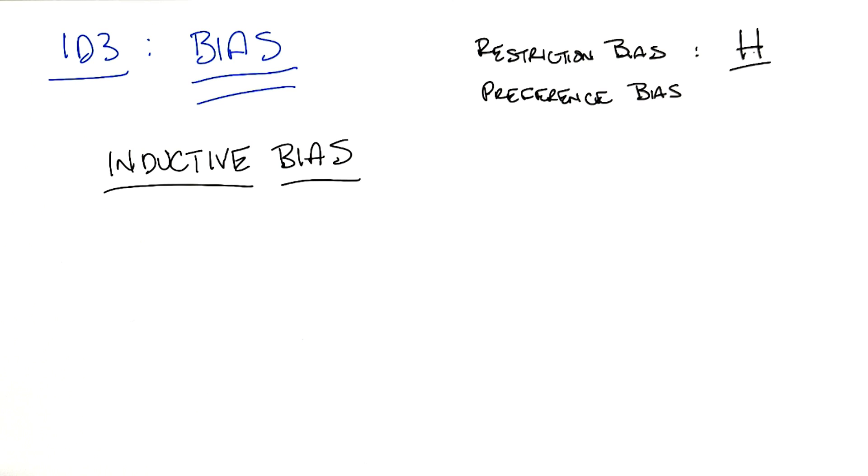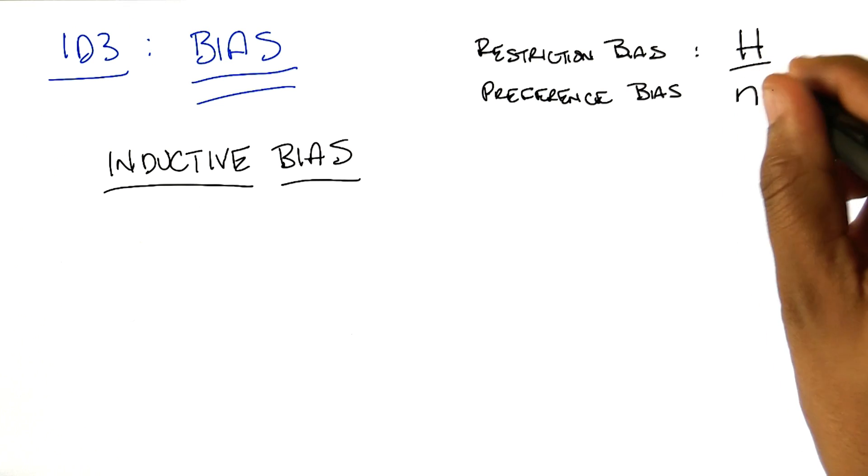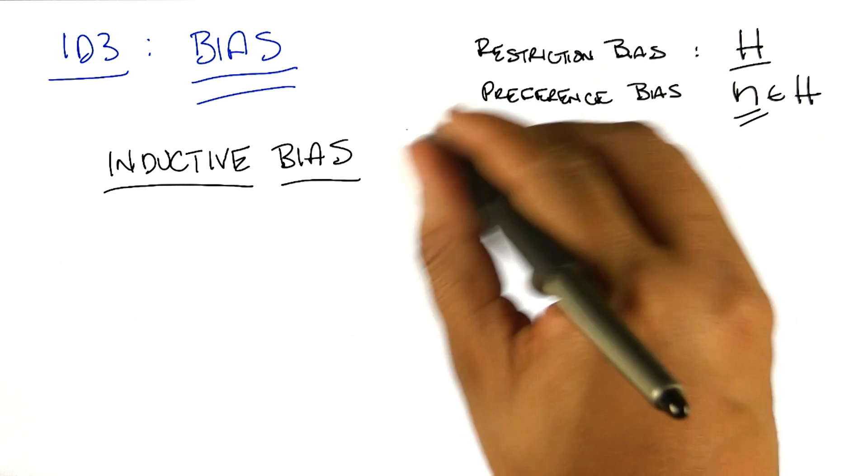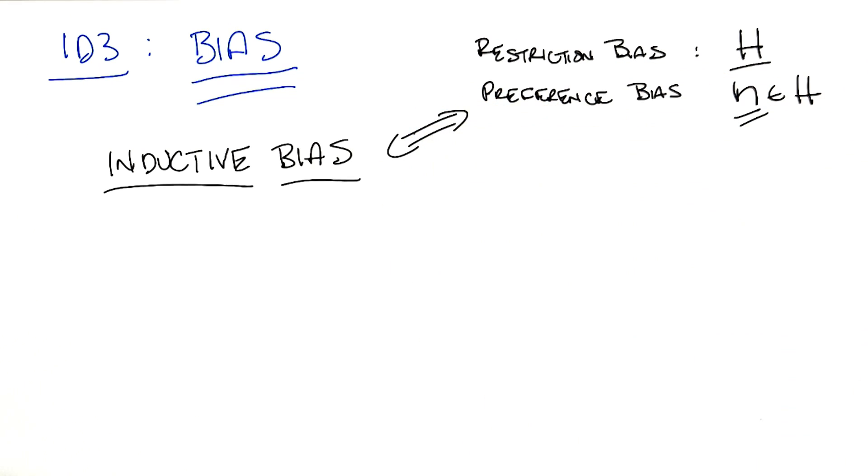But a preference bias is something that's just as important. And it tells us what sorts of hypotheses from this hypothesis set we prefer. And that is really at the heart of inductive bias.